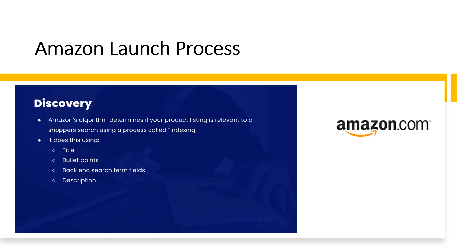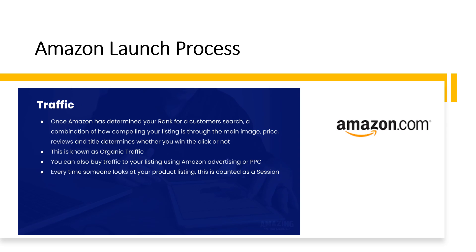This is known as your organic rank, which is basically what position you show up in the search results when a shopper searches for your type of product on Amazon. When it comes to traffic, once Amazon has determined your rank for a customer search, a combination of how compelling your listing is — through the main image, price, reviews, and title — determines whether you will win the click. This is known as organic traffic. You can also buy traffic using Amazon advertising or pay-per-click PPC. Every time someone looks at your product listing, this is counted as a session.